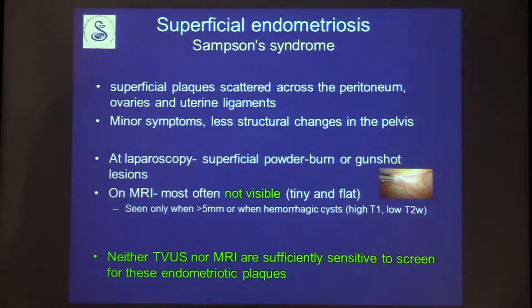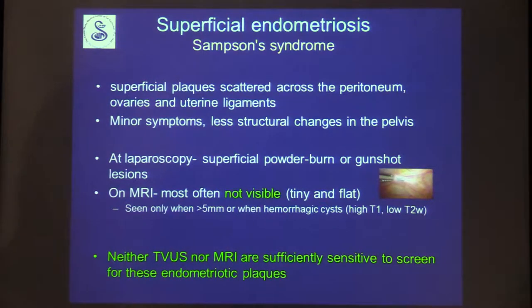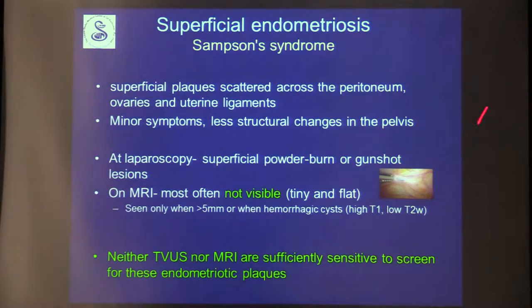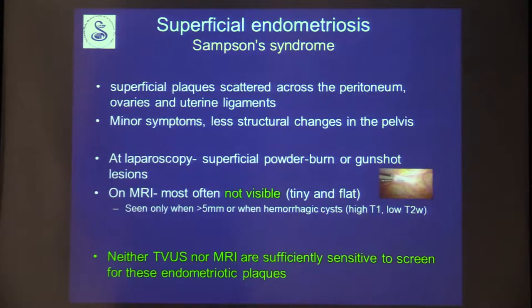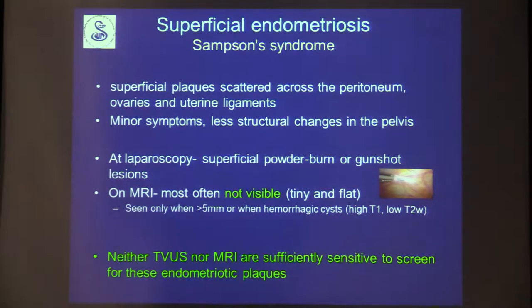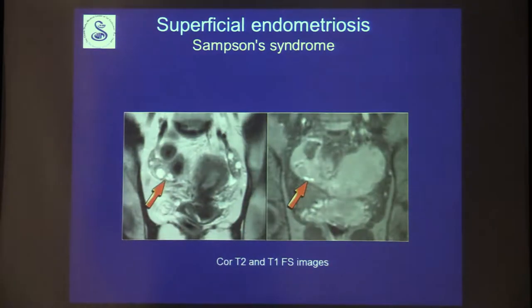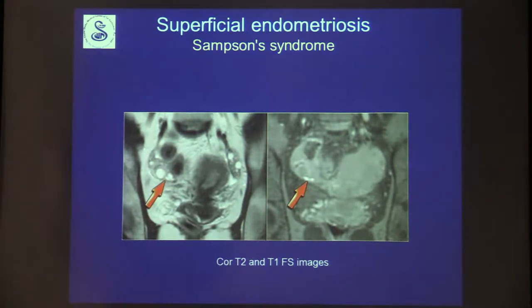Superficial endometriosis consists of plaques scattered across the peritoneum, ovaries, and uterine ligaments, causing minor symptoms since they cause less structural damage. They are mostly seen on laparoscopy and look like superficial powder burns or gunshot lesions. On MRI they are mostly invisible unless large or hemorrhagic. Neither ultrasound nor MRI are sufficiently sensitive to screen for these plaques. In the literature, small punctate hemorrhagic foci on T1 fat-sat images can represent these lesions.